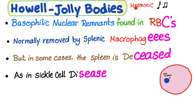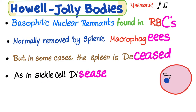As a mnemonic: Howell-Jolly bodies are basophilic nuclear remnants found in RBCs, normally removed by splenic macrophages, but in some cases the spleen is diseased — as in sickle cell disease — so the remnants persist as Howell-Jolly bodies.